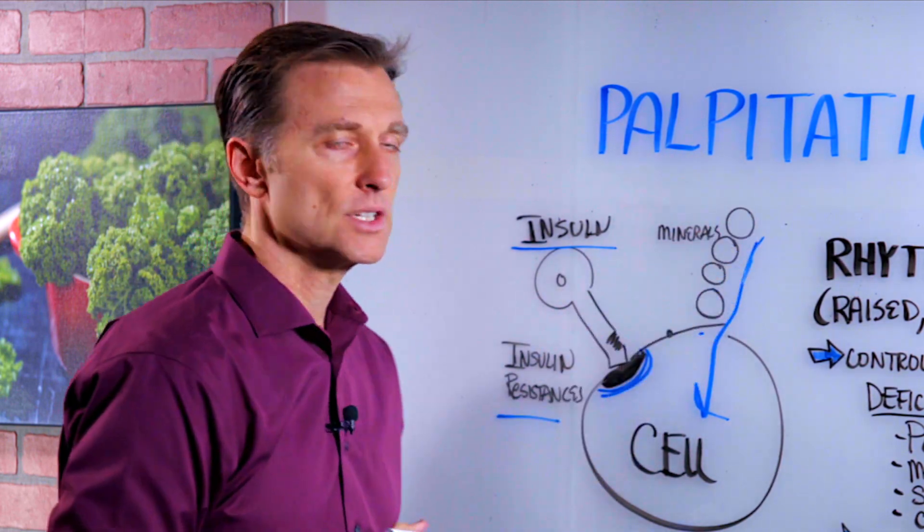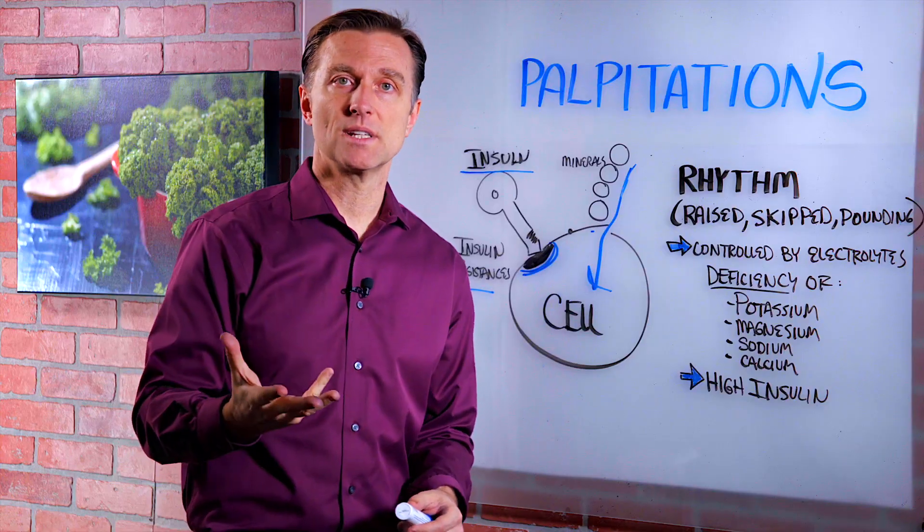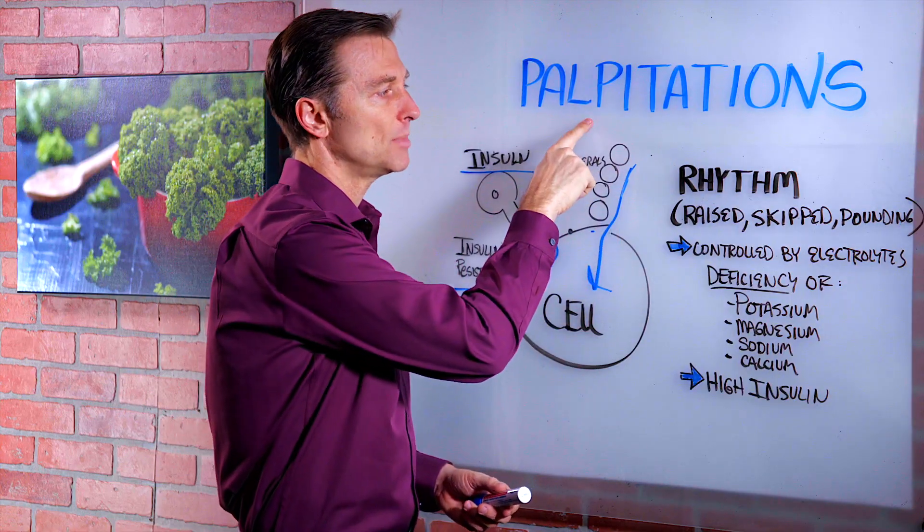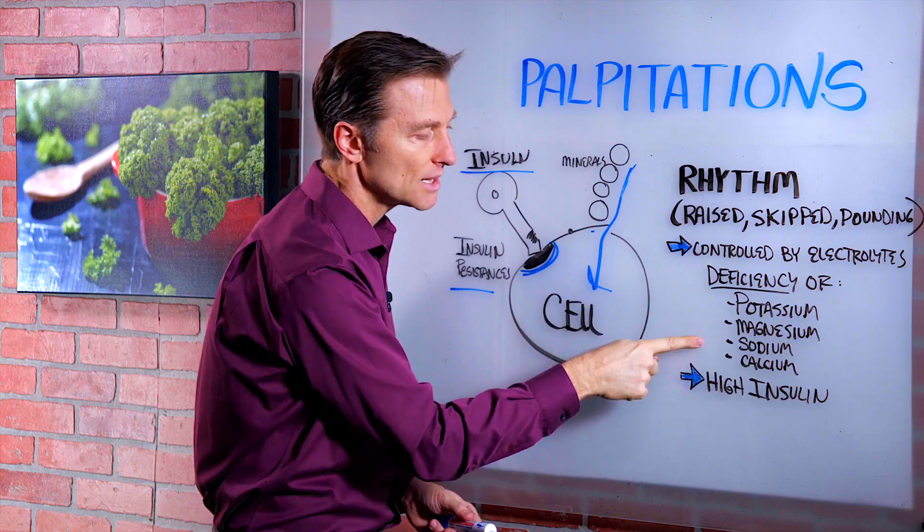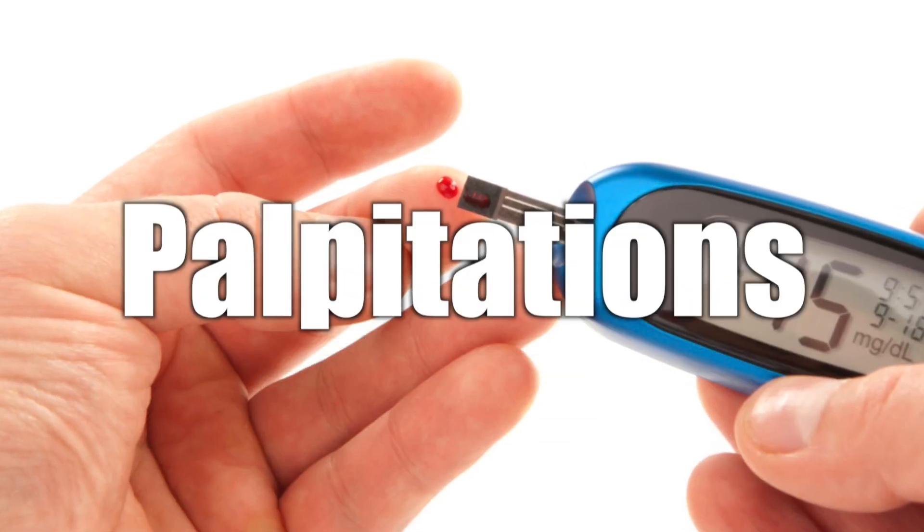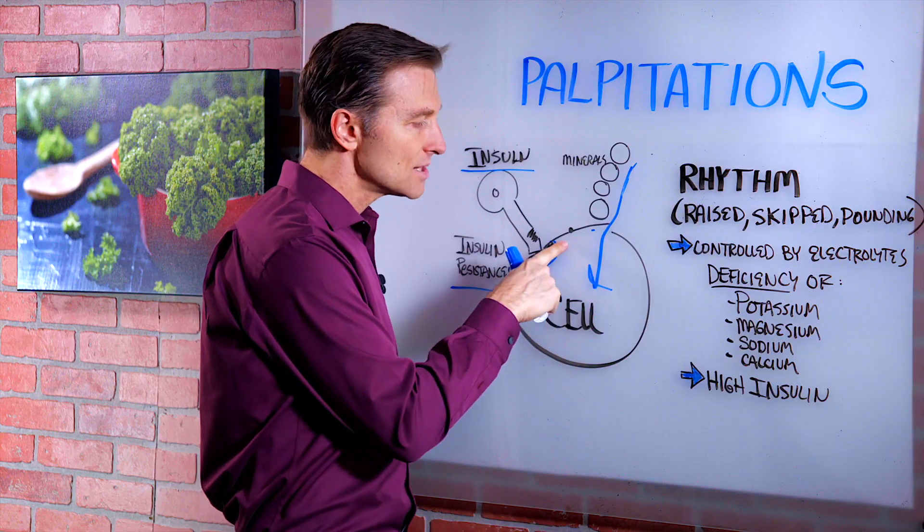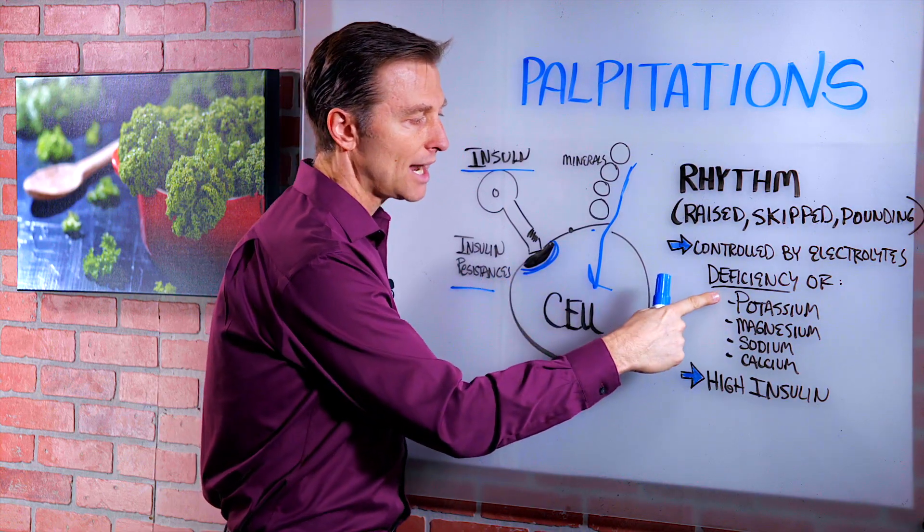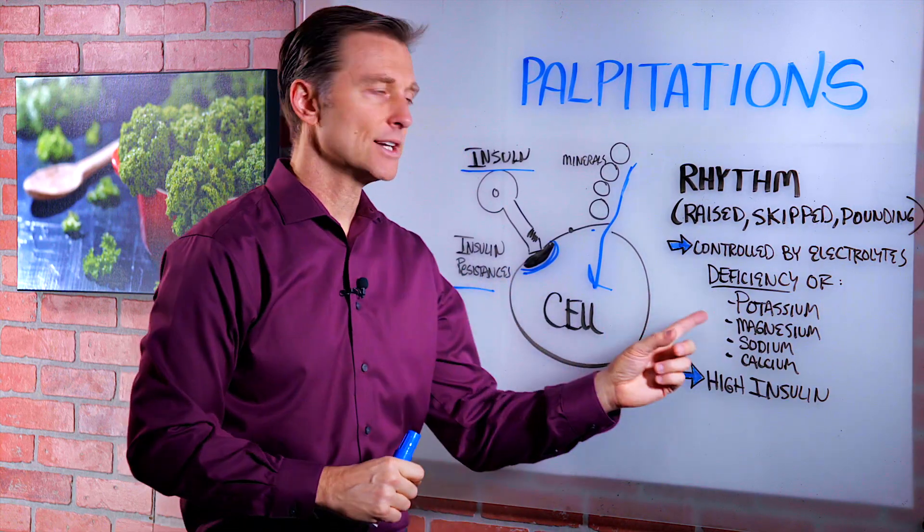So you become deficient in these minerals. So insulin resistance is a common cause for heart palpitations because you're not absorbing these electrolytes. So even one of the symptoms of diabetes is palpitations simply because of the insulin resistance and the blocking of absorption of these electrolytes.